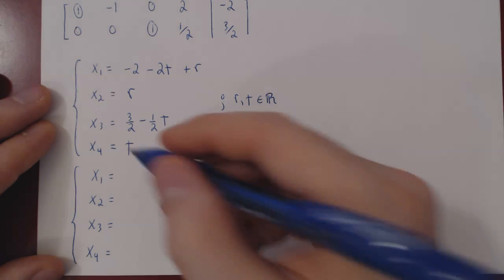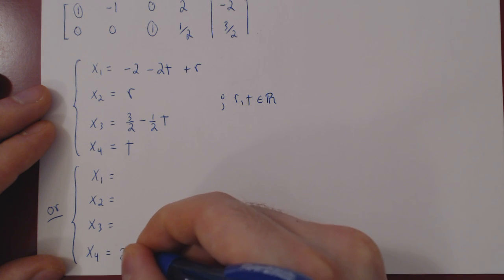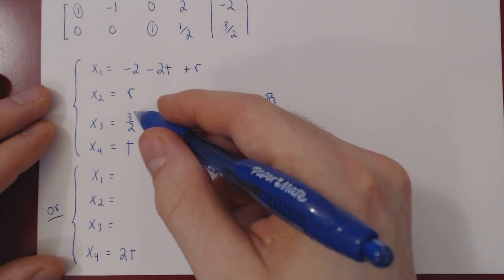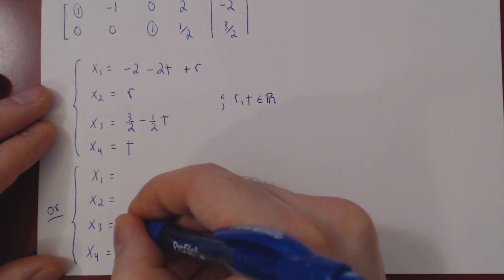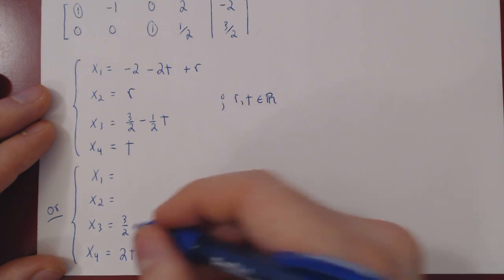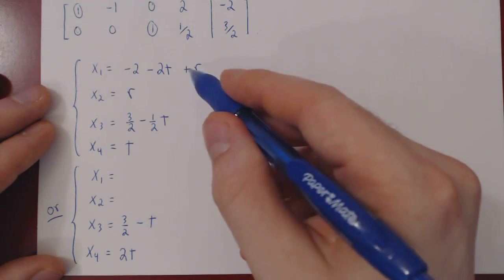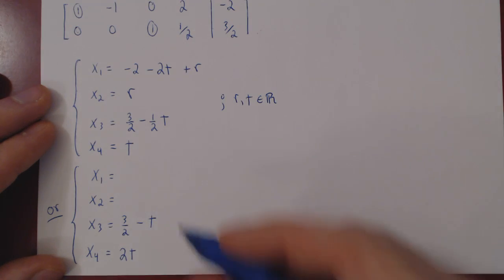So as we've said, replacing t by 2t, x3 will become 3 half, minus 2t over 2, which is t, so 3 half minus t. There's no t here, and we'll leave r alone, because r is not multiplied by any fraction.